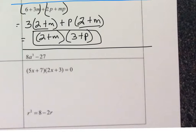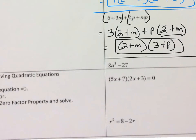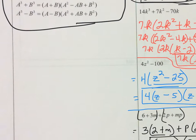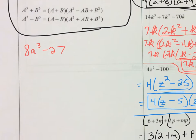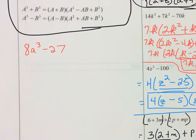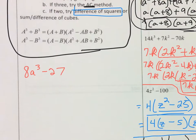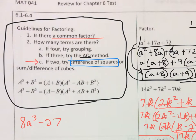You're sure to see a few factoring by grouping problems on your test. Next, let's do 8a cubed minus 27 — the last type of factoring we learned. There is no common factor between 8 and 27. It has two terms, so we check the difference of squares first. But 8 is not a perfect square, so this is not the difference of two squares. We then check sum or difference of cubes.